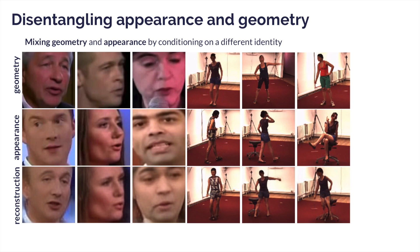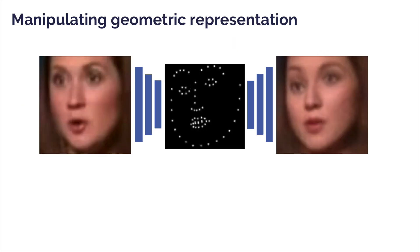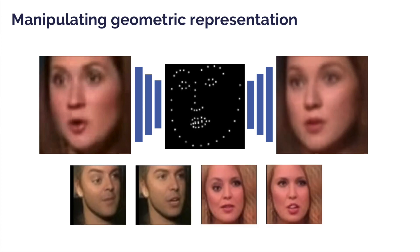Finally, instead of providing the appearance image from the same video sequence, we use an image from a different identity. The model swaps out the appearance of the original image with the supplied appearance image. This shows that the model factorizes geometry and appearance — the decoder sources geometry from the first frame while appearance is sourced from the appearance conditioning image. We can also directly manipulate the keypoints to animate images, which can have interesting applications.